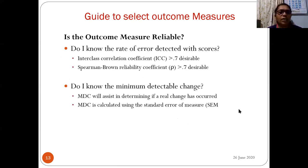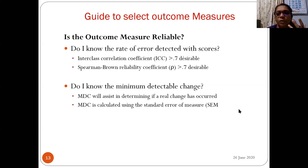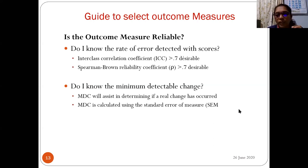Regarding reliability: the intraclass correlation coefficient (ICC) above 0.7 is considered desirable for a good reliable outcome measure, as is a Spearman-Brown reliability coefficient above 0.7. We should also know the minimal detectable change (MDC), which is the smallest amount of noticeable change indicating the patient has improved clinically. MDC assists in determining if real change has occurred and is calculated using the standard error of measurement.